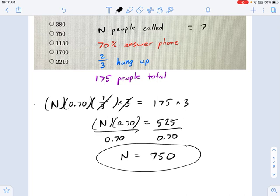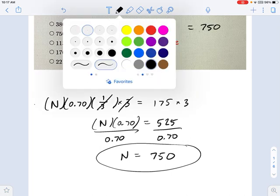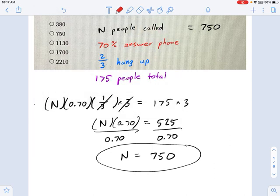Okay, so let's just run through the math, and I'll show you how this works in the other direction. 750 people called. All right, 750 times 0.7. That means 525 picked up the phone.